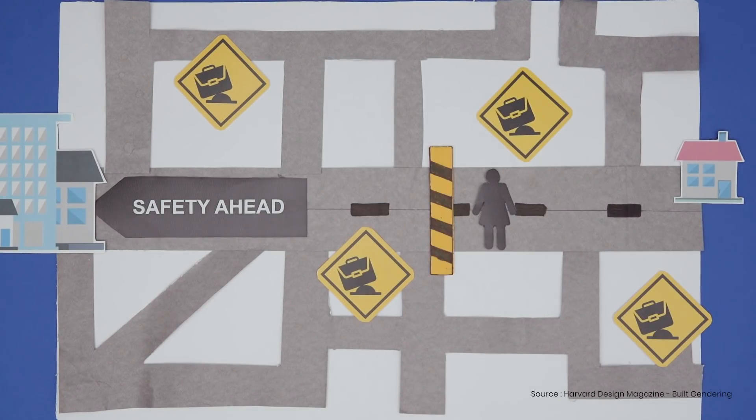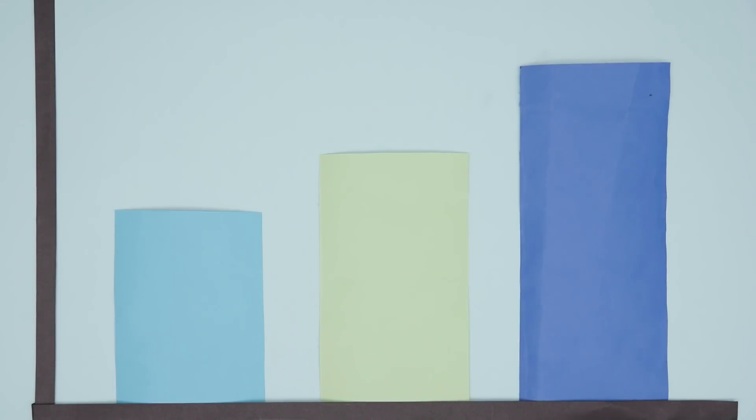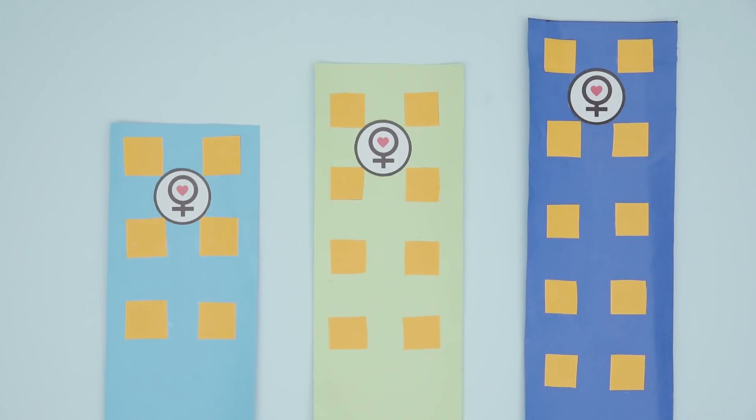Even safety is gendered. There's a lack of infrastructural support for women in city planning. More data from women would help make cities more female-friendly, by including more pavements, footpaths, and streetlights.